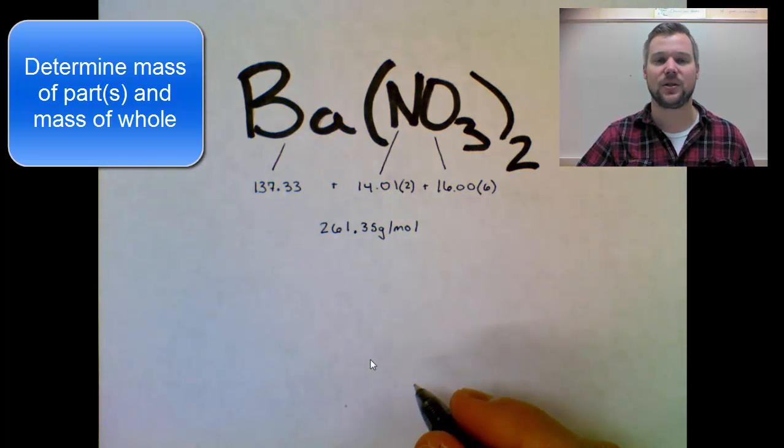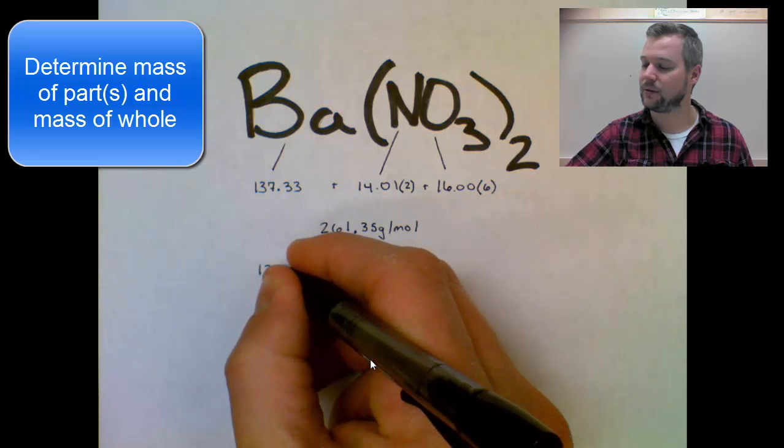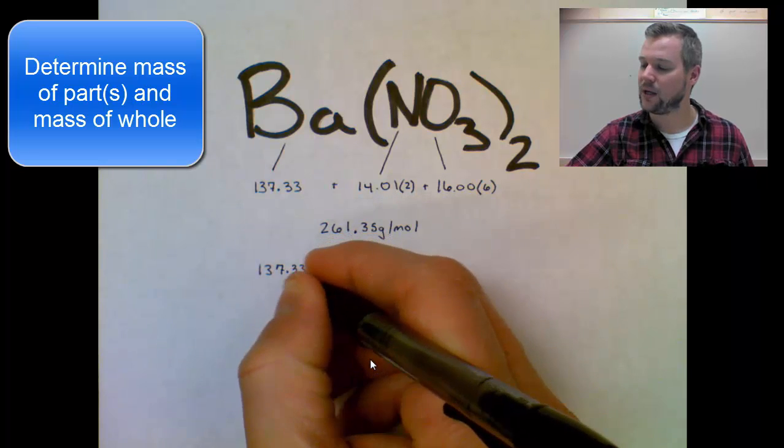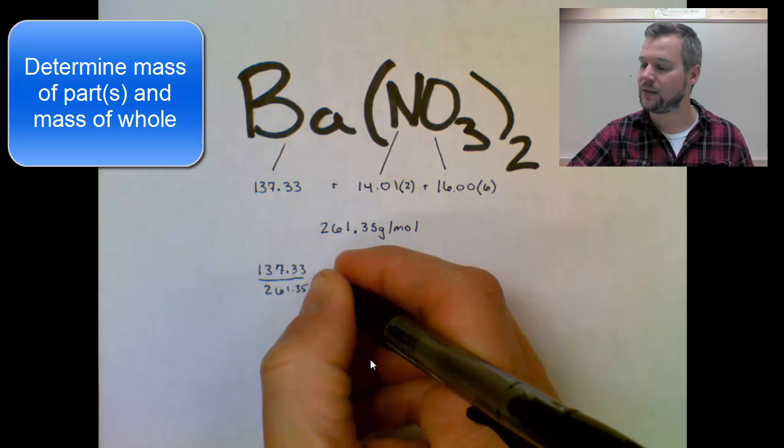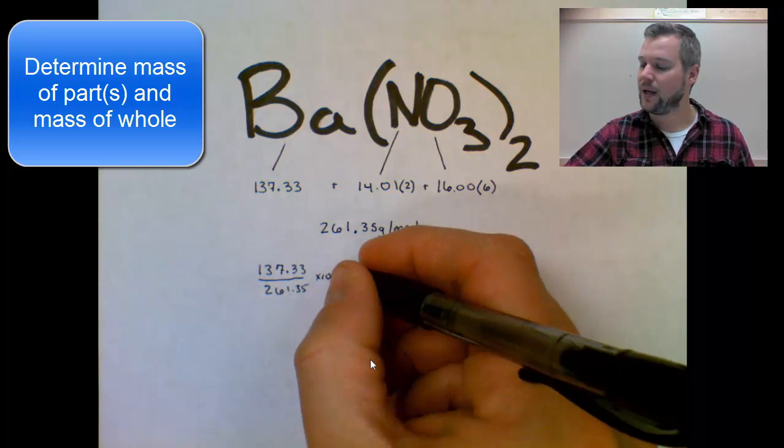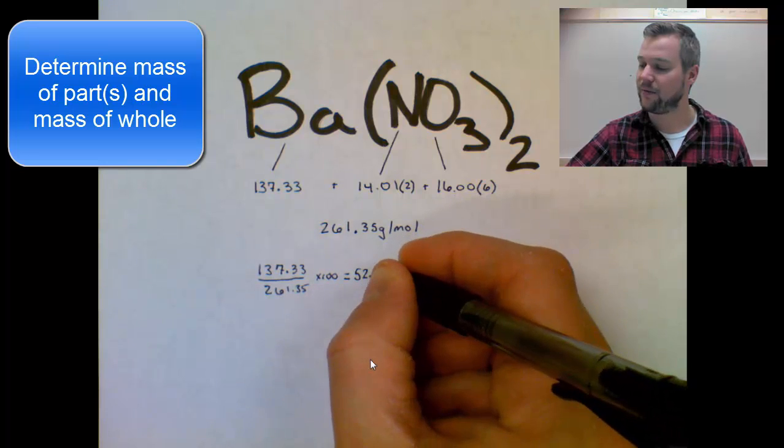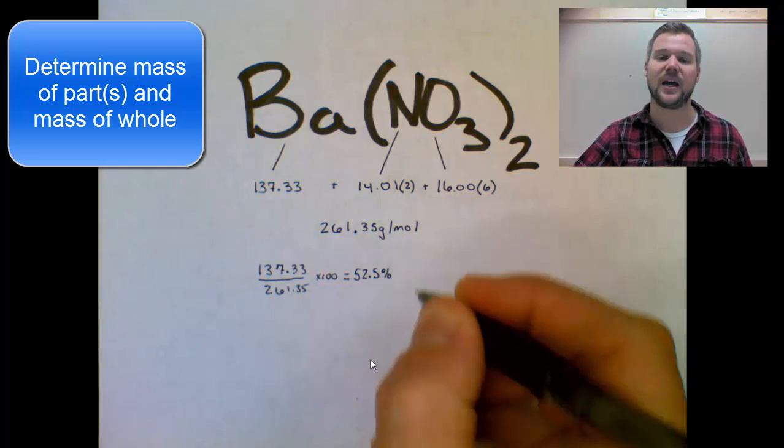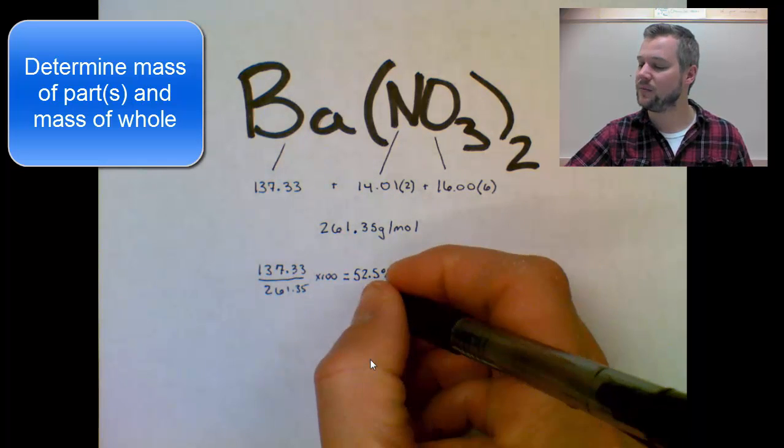Now if I want to know a percent composition of each element, I need to take each part and divide it by the whole thing. So I would take the 137.33 divided by 261.35 times 100, and that equals 52.5%. I just have us round these to the nearest tenth. This is barium.